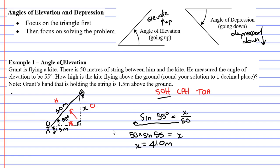The question is asking how high the kite is flying above the ground, and we need to remember that the triangle actually starts 1.5 meters above the ground already. So we need to take the 41.0 and add the 1.5, giving us 42.5 meters. That is the height of the kite above the ground, and that concludes our video on example one.